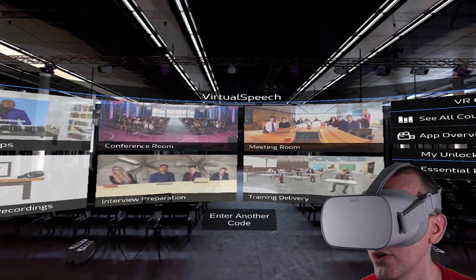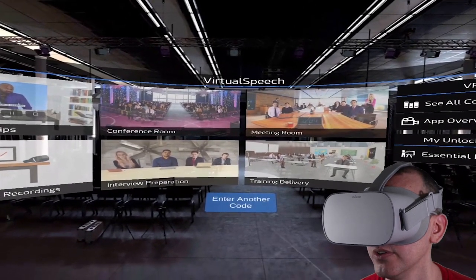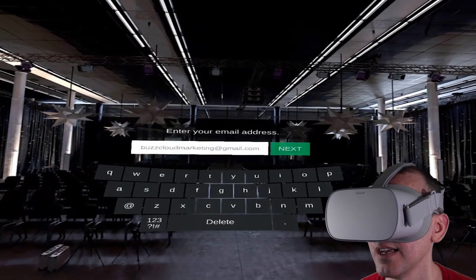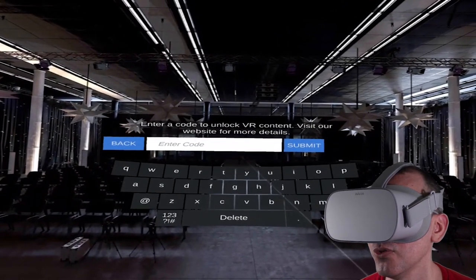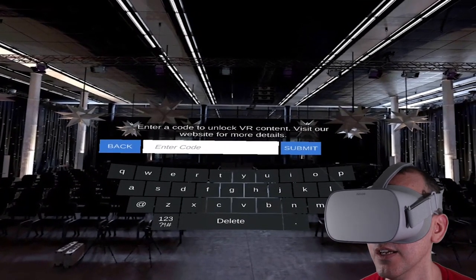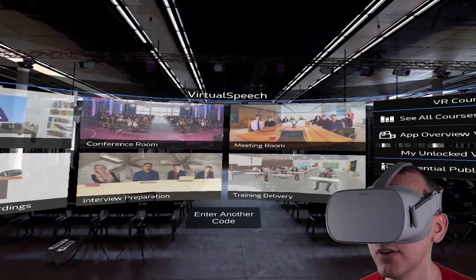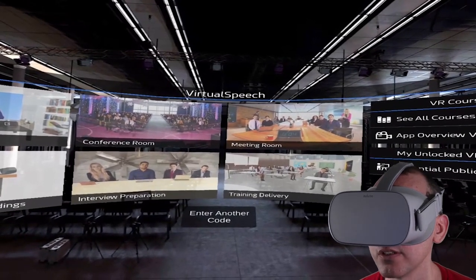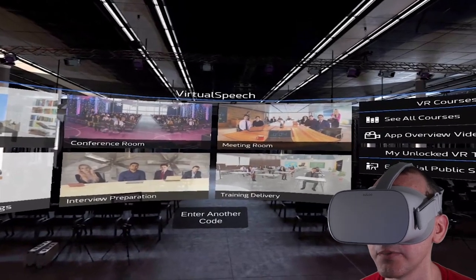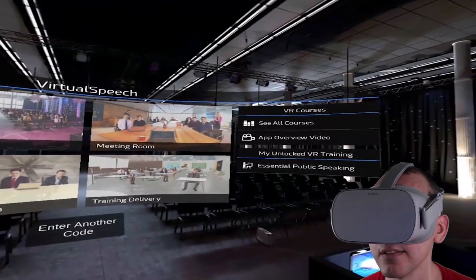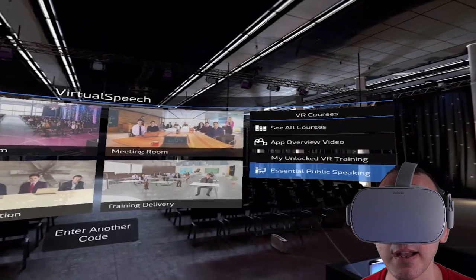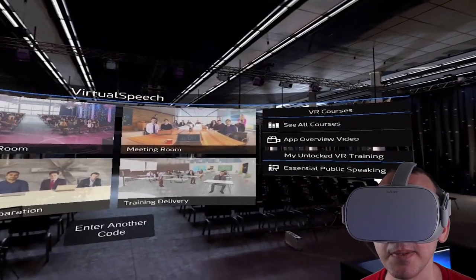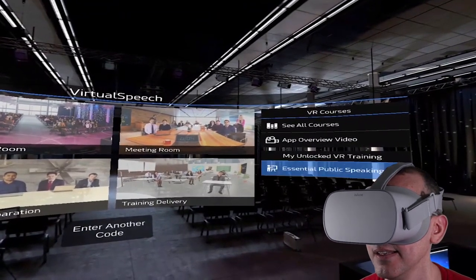Once you're inside the main menu of the Virtual Speech app, all you do is go to Enter Code, put in the email address that you assigned your login with, click Next, then put the code that they would have sent you via email and click Submit. After that, you'll be brought back to the menu and it will have a little pop-up saying installing. Depending on the size of the workshop and your internet connection, it will take between 20 seconds up to one minute. After that, it will be here under My Unlocked VR Training — for us, we have the Essential Public Speaking. And that's it, it's that easy.